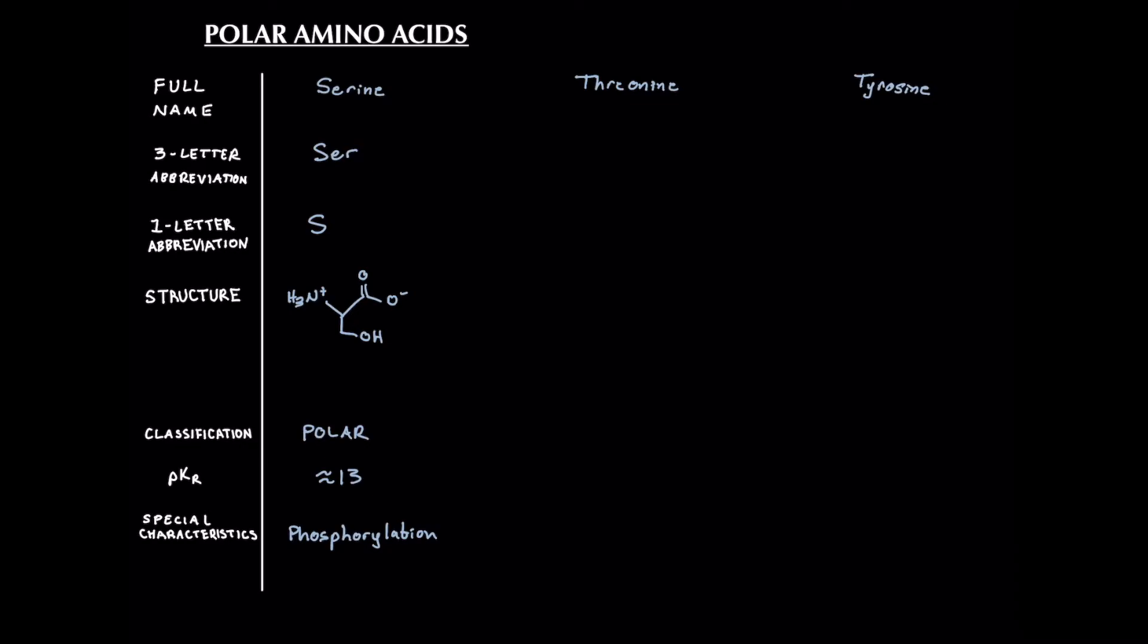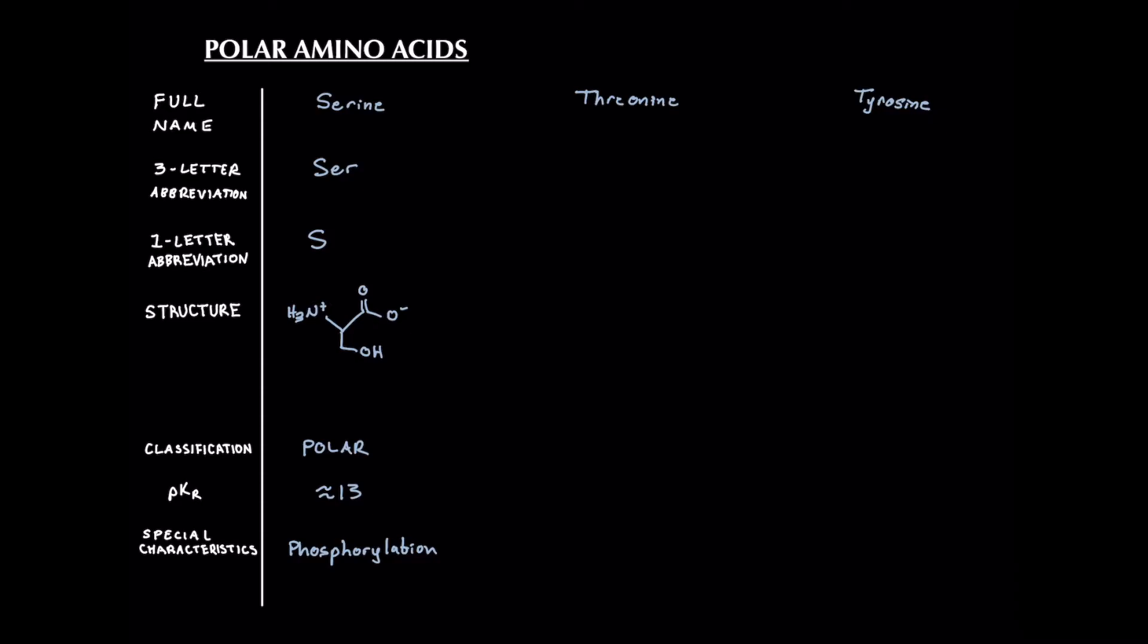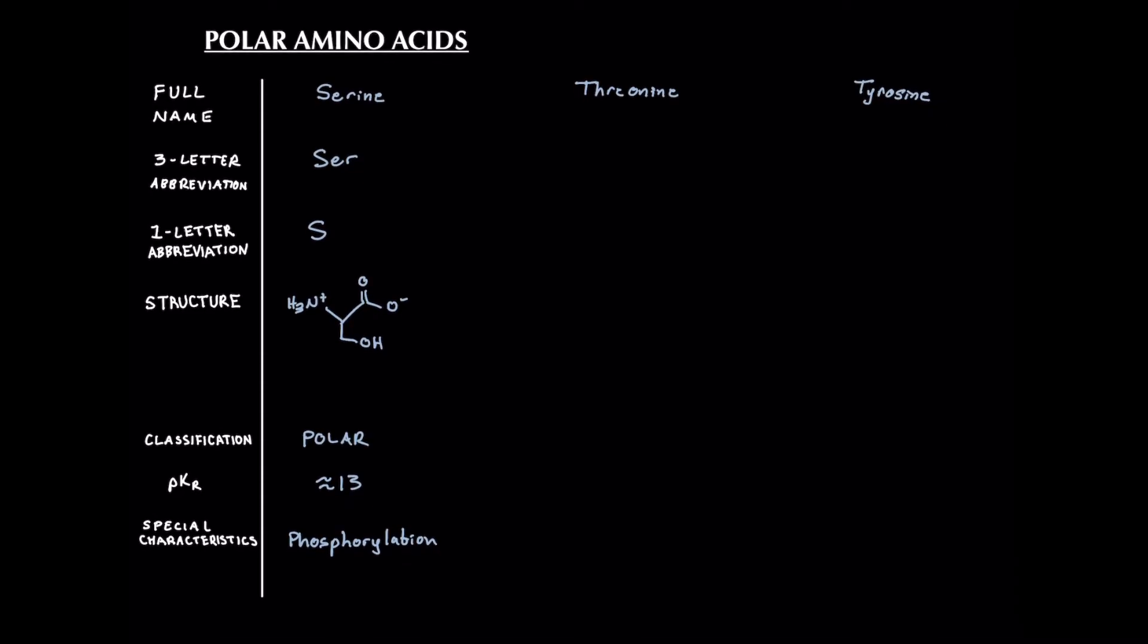It's phosphorylated not in its backbone but in its side chain. So let's take a look at how that could work. If we erase the H here and we take this oxygen and form a phosphomonoester bond, that is how we can phosphorylate serine right there.